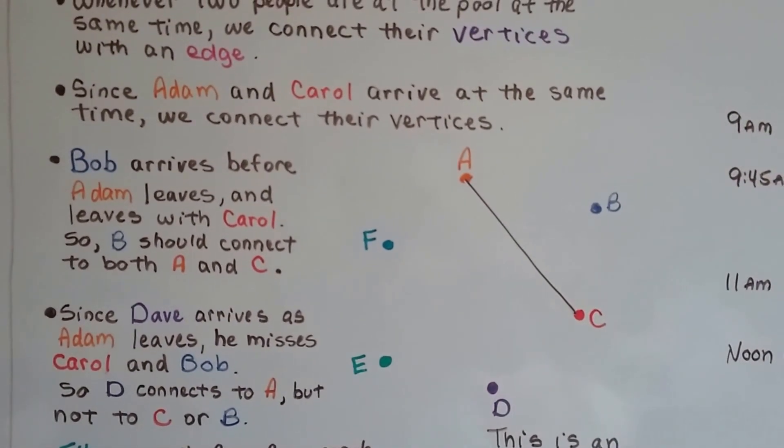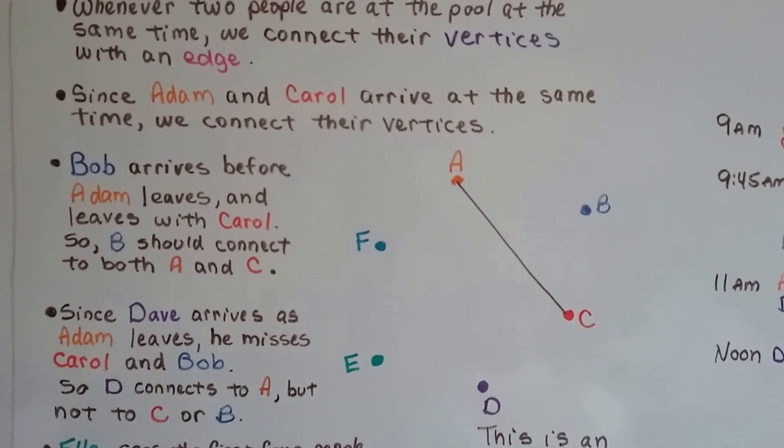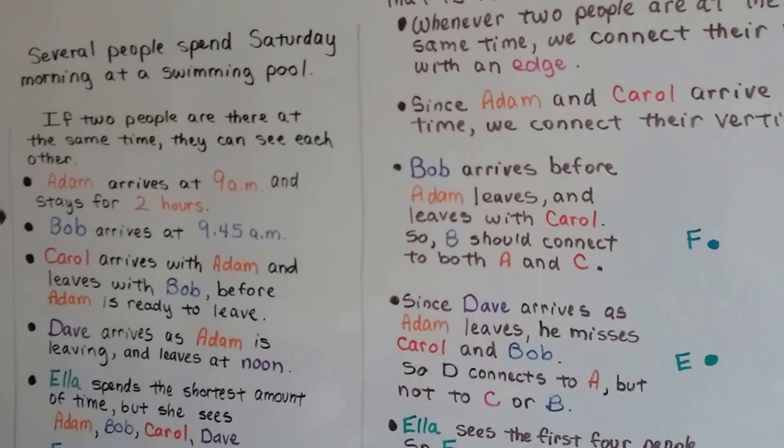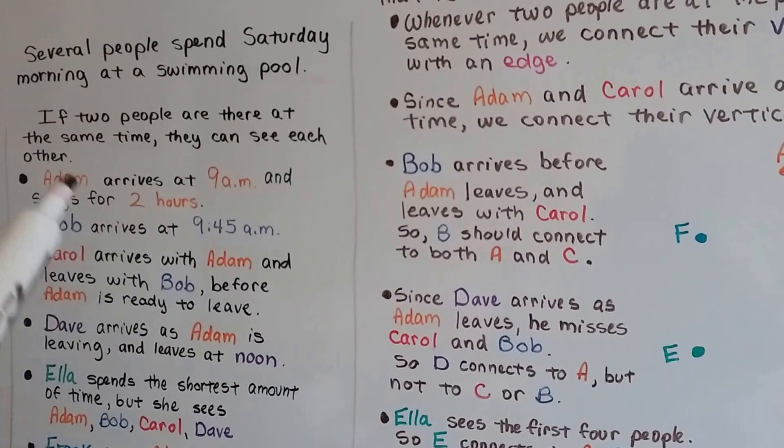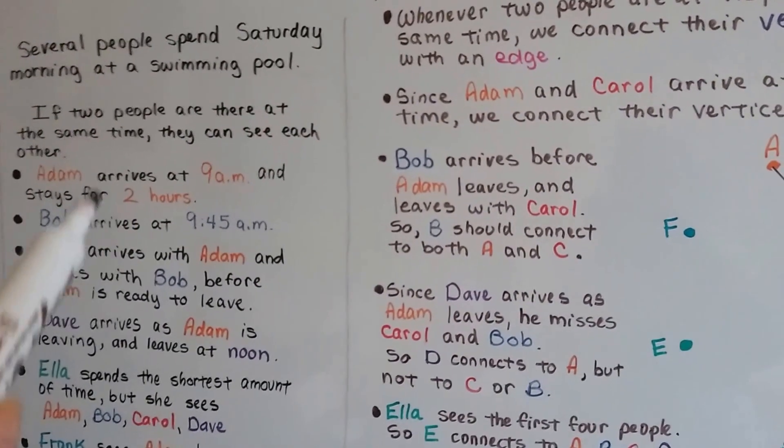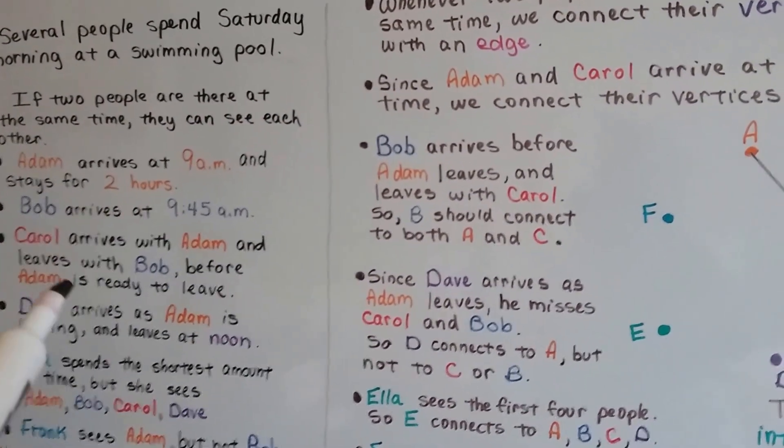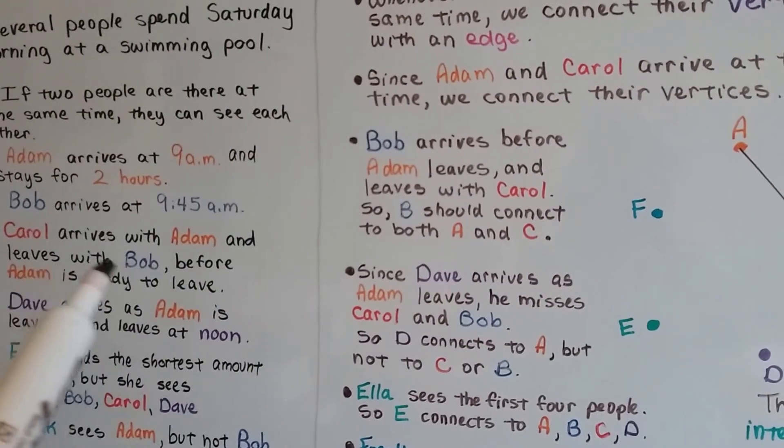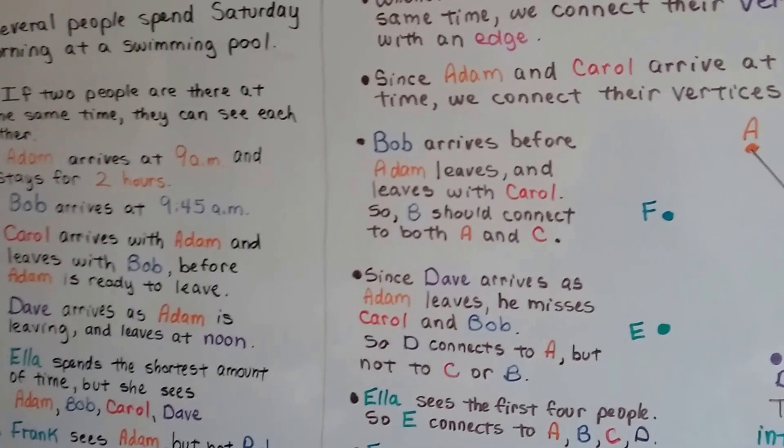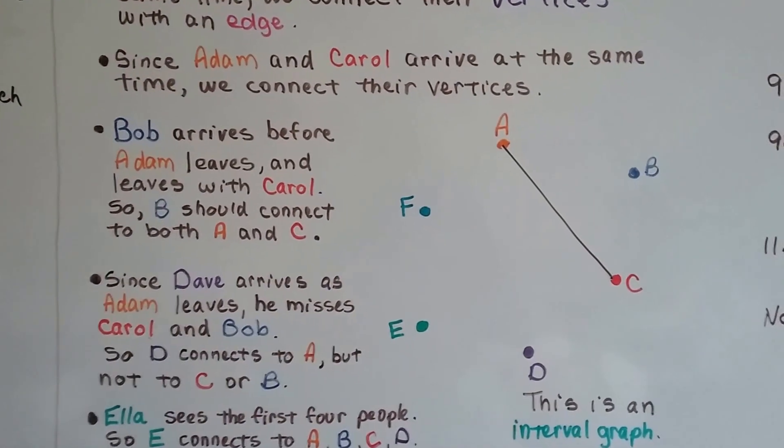Bob arrives before Adam leaves and he leaves with Carol. Bob arrived at 9:45. Adam didn't leave until 11, so you know they had to have seen each other. Carol arrived with Adam and she left with Bob. So to leave with him, she had to see him. B should connect to both A and C.